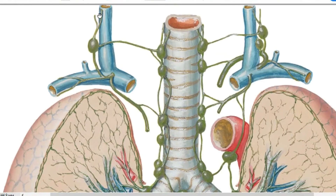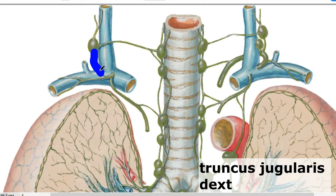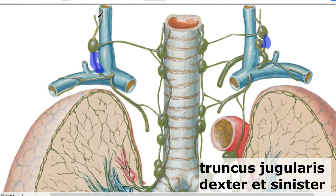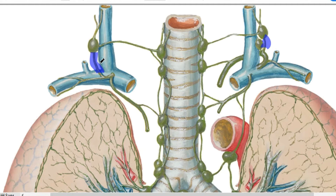From your head and neck, all lymph is drained into the truncus jugularis — the jugular trunk. The truncus jugularis is created by the efferent vessels of the deep lateral cervical lymph nodes, and it accompanies the internal jugular vein, which is why it's called truncus jugularis. It drains lymph from the corresponding half of the neck and head.